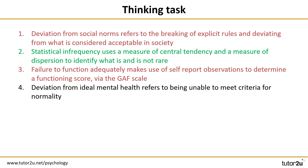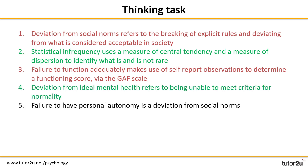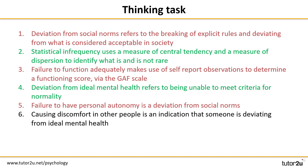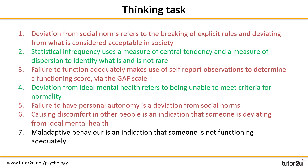Deviation from ideal mental health refers to being unable to meet criteria for normality — of course, this is true. Failure to have personal autonomy is a deviation from social norms — this is false, since personal autonomy is related to a different definition. Causing discomfort in other people is an indication that someone is deviating from ideal mental health — this is also false, because causing other people discomfort belongs with the failure to function adequately definition. Finally, maladaptive behaviour is an indication that someone is not functioning adequately — this is true. Give yourself a tick for any of those that you got right.